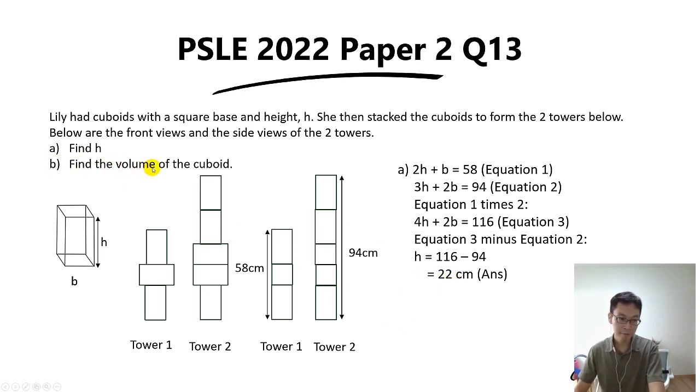Now for part b, to find the volume of the cuboid you need to find the value of b. To find the value of b you need to substitute 22 inside the h over here. So to find the value of b you do 58 minus 2 times h.